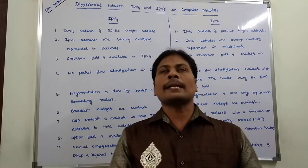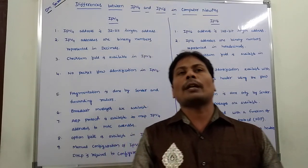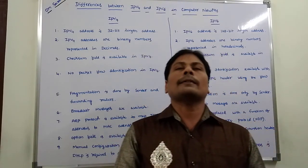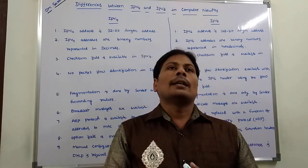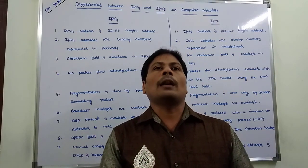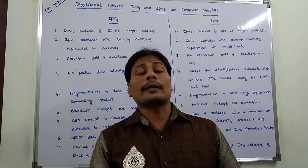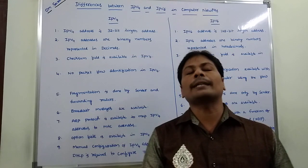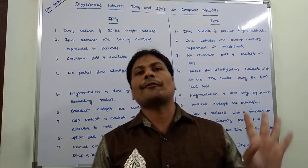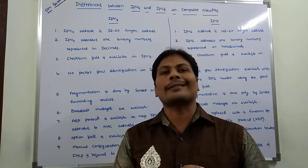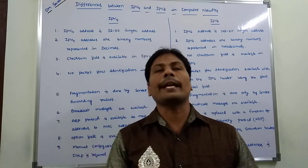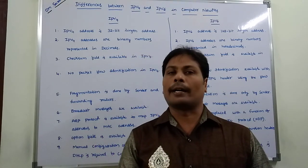The first difference between IPv4 and IPv6: in the case of IPv4 protocol, the addresses are 32-bit addresses. But in the case of IPv6, the addresses are 128-bit addresses.